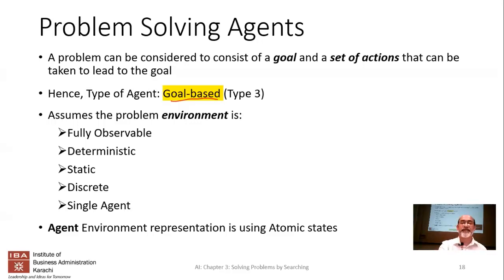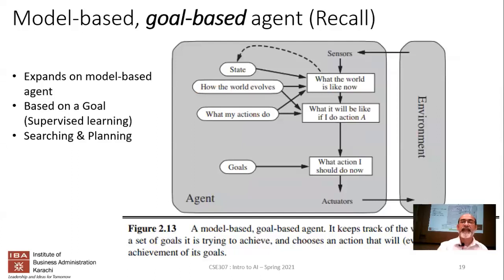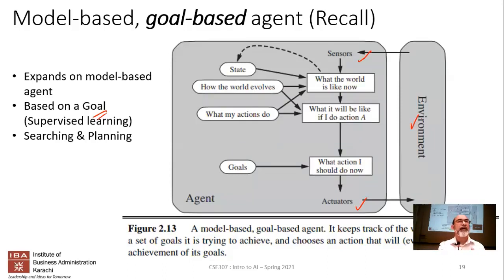Looking back at the problem solving agent structure: there's an environment, sensors, actuators, and a goal. If you're trying to solve a particular problem, you need a goal. If you're going from point A to B and have a goal, that's a problem-solving case. If you're wandering aimlessly, you're not trying to solve a problem.